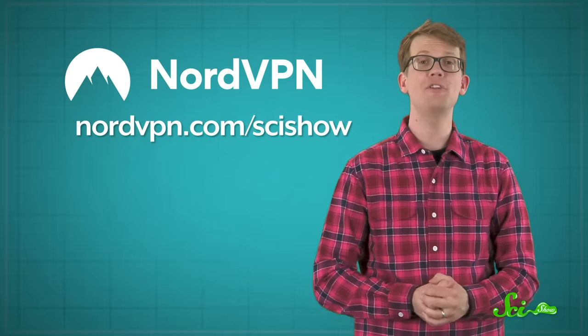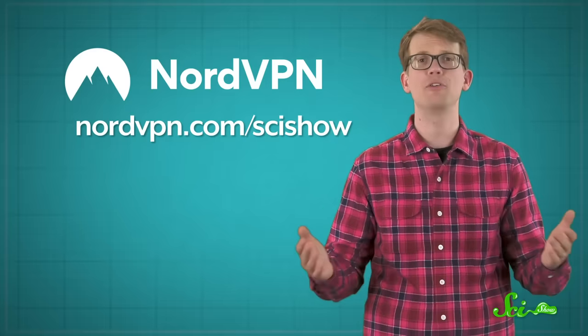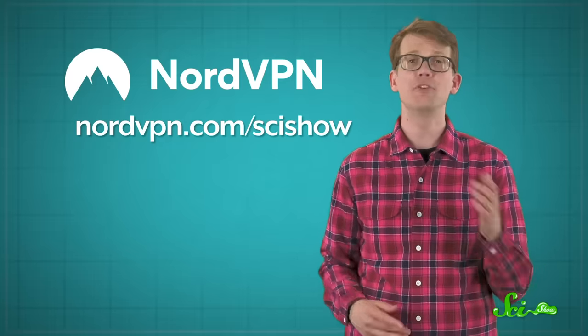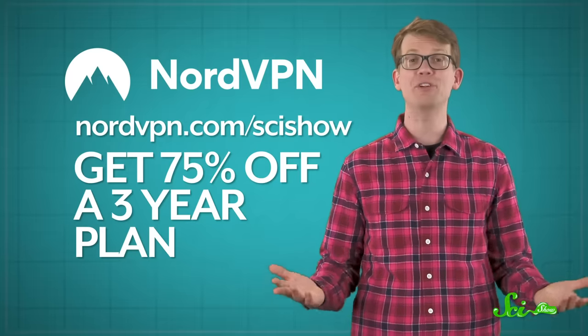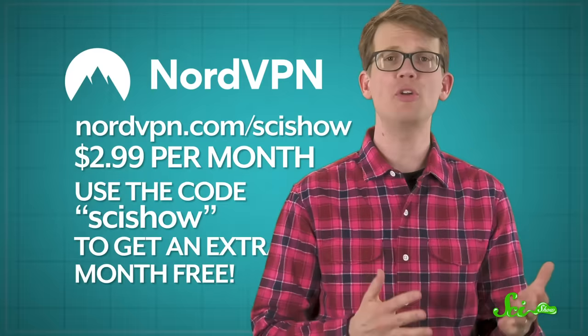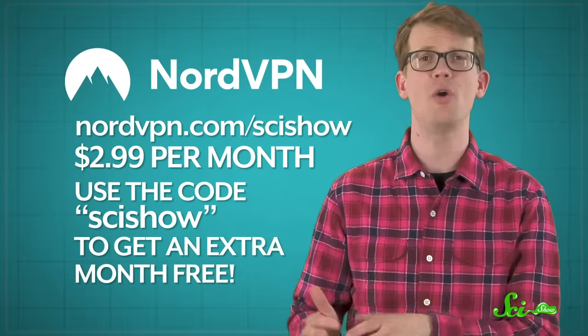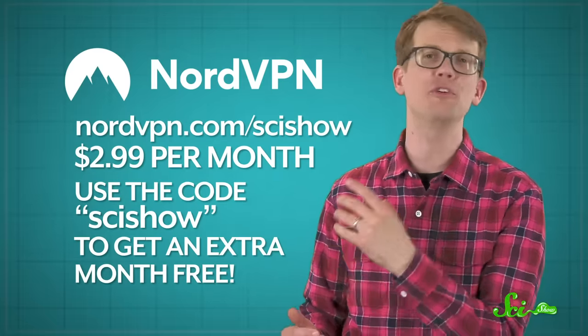And if we could do that, advances like these could one day help us catch criminals, find contraband, and solve cold cases faster and more accurately than ever. And remember, you can head to NordVPN.com slash Scishow to start protecting your digital information with their virtual private networks today. For a limited time, you can get 75% off a three-year plan by going to NordVPN.com slash Scishow. Your subscription will be just $2.99 a month, and you can use the code Scishow to get an extra month of Nord for free, so you can protect yourself from cybercrimes and support Scishow at the same time.